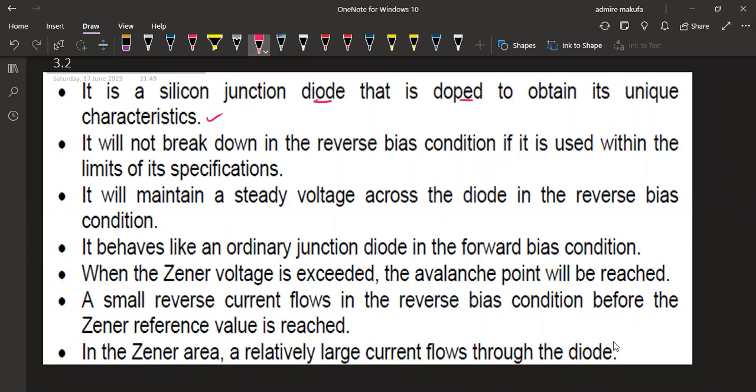It will not break down in the reverse bias condition if it is used within limits of its specifications. So each and every diode has got its specifications, like the Zener breakdown current, and so forth. As long as those concepts are being followed, then there is no breakdown in any reverse bias that we are going to have. It will maintain a steady voltage across the diode in reverse bias condition. It behaves like an ordinary junction diode in the forward bias condition.